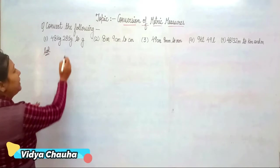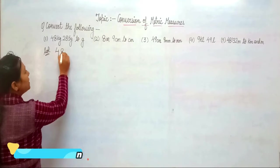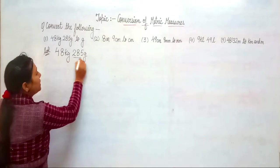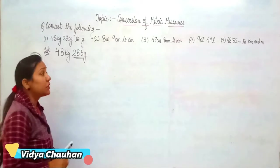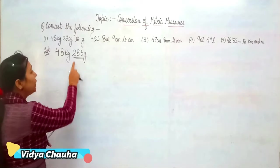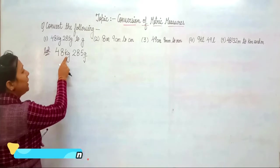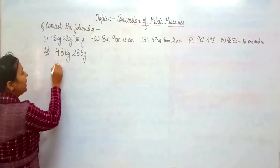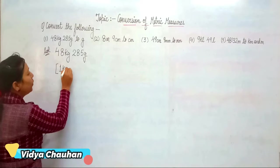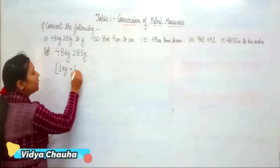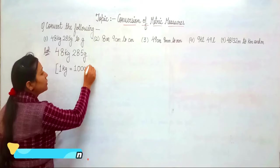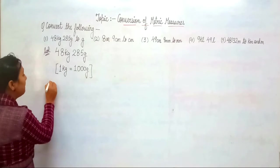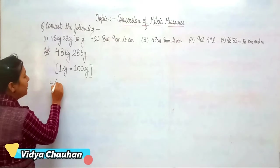We have 48 kg and 285 grams. The second term, 285 grams, is already in gram form. So what we have to do is convert 48 kg into grams. First, identify how many grams are in 1 kg. Since 1 kg equals 1000 grams, we need to find how many grams are in 48 kg — it will be multiplied.